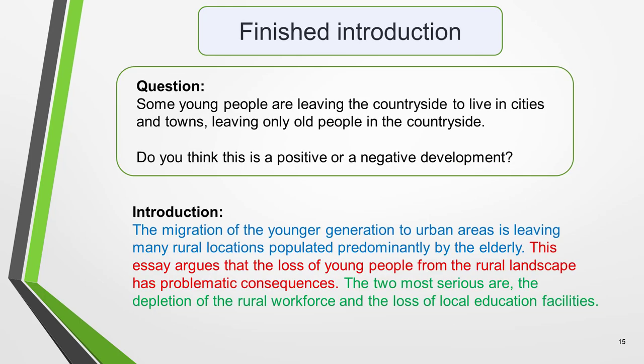Now let's pull the whole introduction together. The colour coding helps you to identify the three different parts. 'The migration of the younger generation to urban areas is leaving many rural locations populated predominantly by the elderly. This essay argues that the loss of young people from the rural landscape has problematic consequences. The two most serious are the depletion of the rural workforce and the loss of local education facilities.'